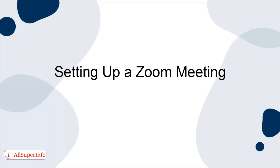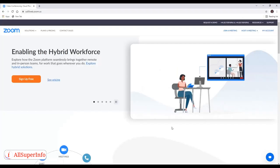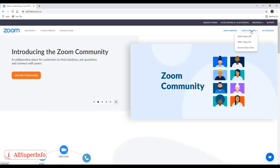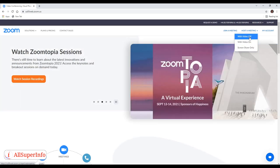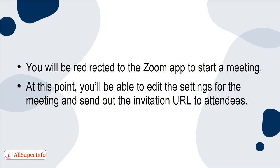Here are the instructions for easily setting up a Zoom meeting. Desktop: Start by logging into your Zoom account. Move the cursor over Host a Meeting in the top right corner of your screen and choose from the following options: video on, video off, or screen share only. You will be redirected to the Zoom app to start a meeting. At this point, you'll be able to edit the settings for the meeting and send out the invitation URL to attendees.